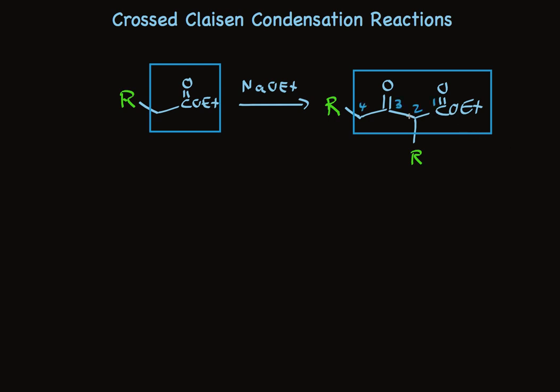It's the one and the three carbons that have functional groups, and two and four have substituents that are always the same. They must be the same.